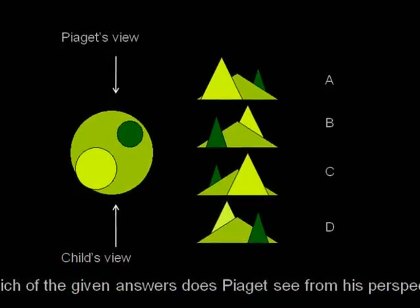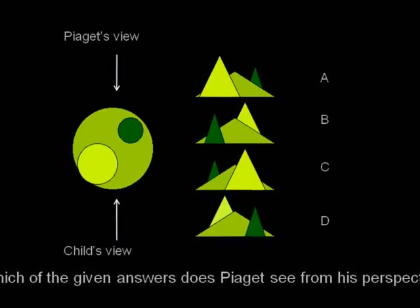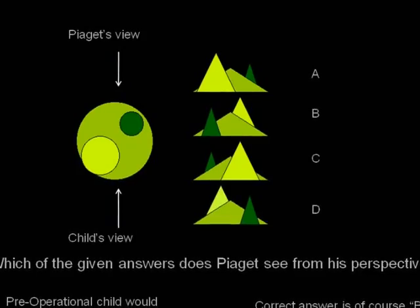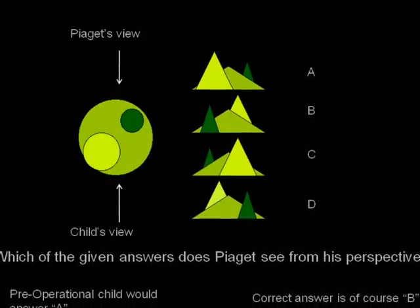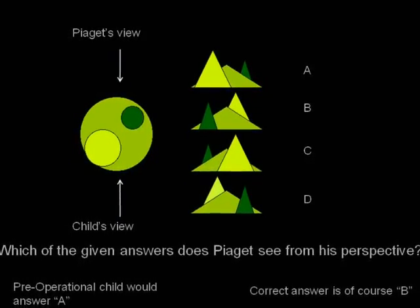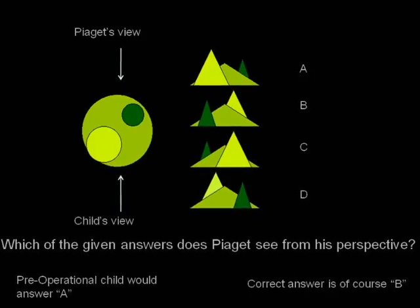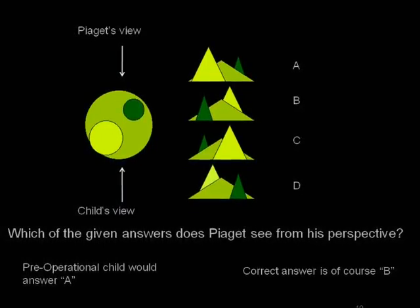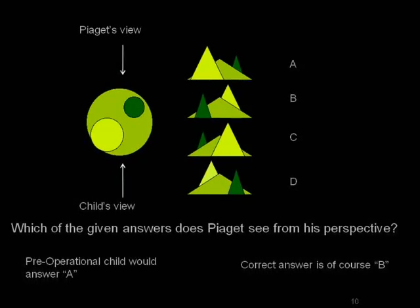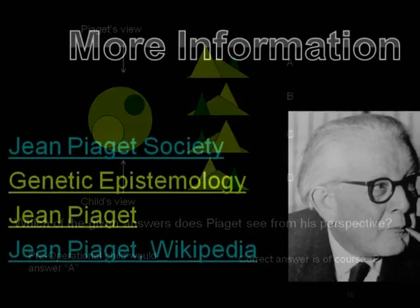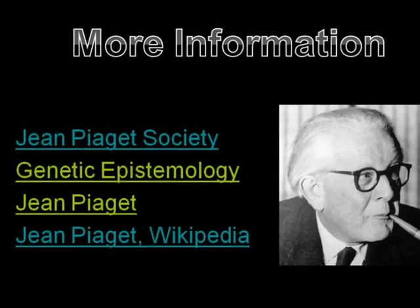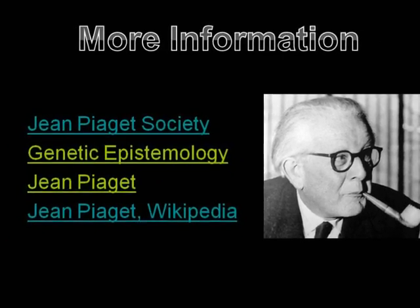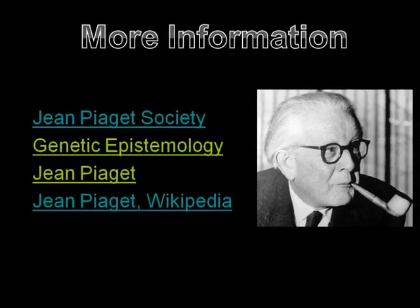Take, for example, this classic Piaget question. Imagine Piaget sitting across from a child with a 3D mountain model between them, as shown. In knowing the stages of development, we can know that this is too much of a challenge for pre-operational kids, but is age-appropriate for a concrete operational child. For more information on Jean Piaget and his theory of genetic epistemology, please follow these hyperlinks. Thank you for listening.